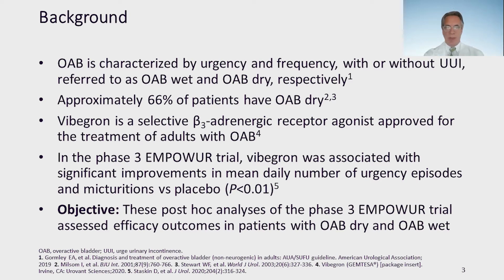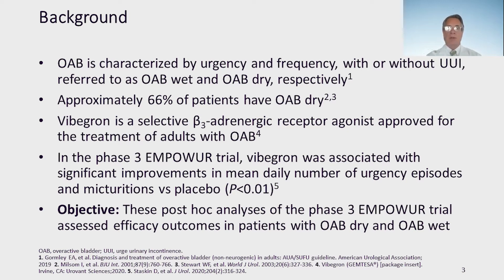Vibegron is a selective beta-3 agonist approved for the treatment of adults with overactive bladder. In the Phase III EMPOWER trial, Vibegron was associated with significant improvements in mean daily number of urgency episodes and micturitions versus placebo. These post-hoc analyses of the Phase III EMPOWER trial assessed efficacy outcomes in patients with OAB wet and OAB dry.